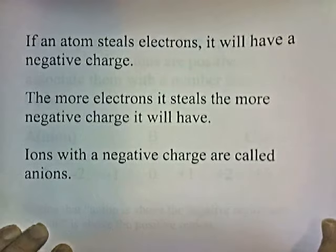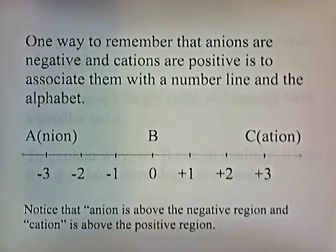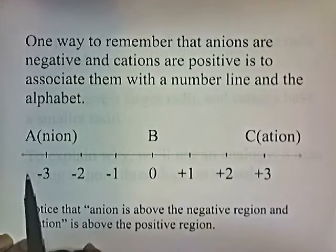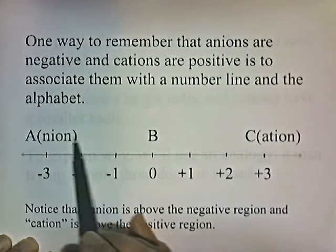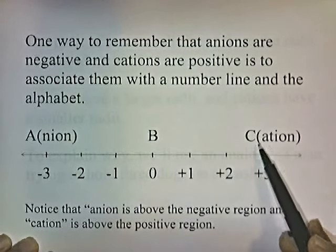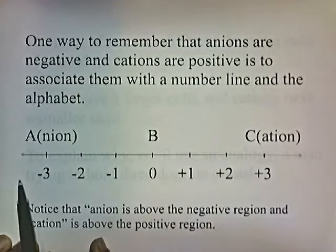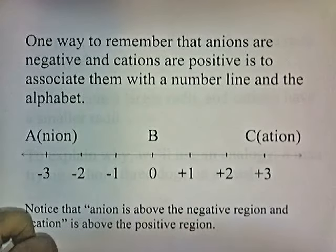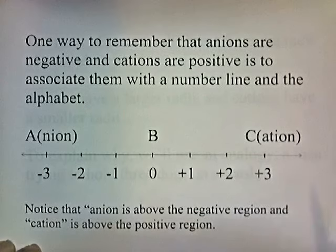There's a way to remember which one is which. To remember that anions are negative and cations are positive, associate them with a number line and the alphabet. If you write the letters A, B, C, D from left to right, a number line starts negative on the left and becomes positive as you go right. Anion sits next to A, which is above the negative region, and cation is above the positive region. That's how to remember that anions are negative and cations are positive.